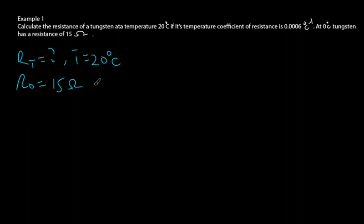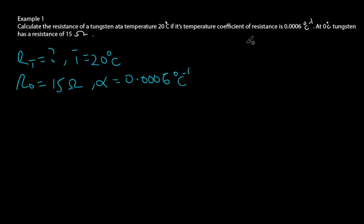The alpha, which is the temperature coefficient of resistance, is given as 0.0006 degrees Celsius inverse. Because the temperature coefficient is given in degrees Celsius inverse, we keep our temperature in degrees Celsius. If it were given in Kelvin, we would need to convert the temperature to Kelvin as well.